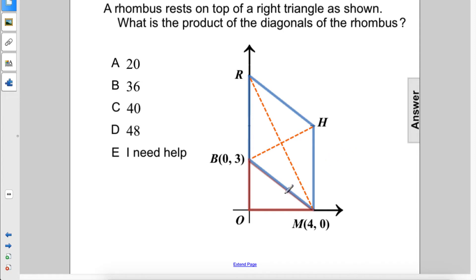A rhombus rests on top of a right triangle as shown. What is the product of the diagonals of the rhombus?